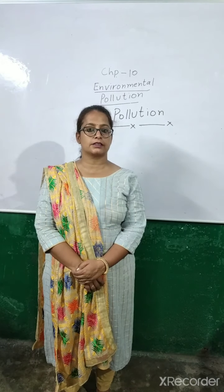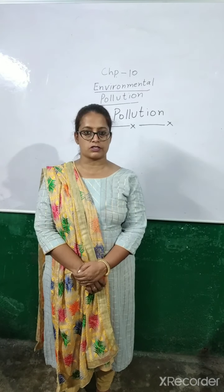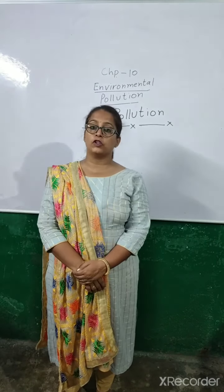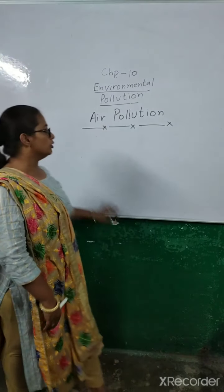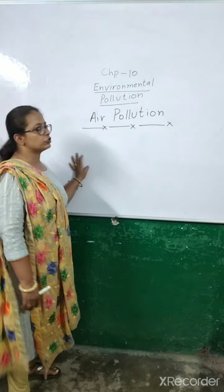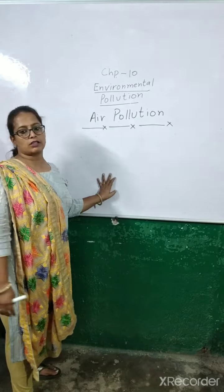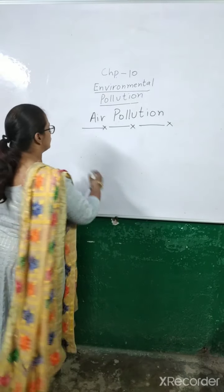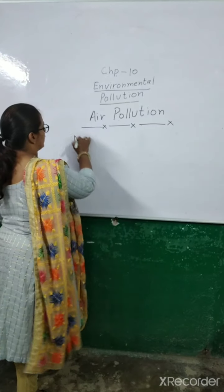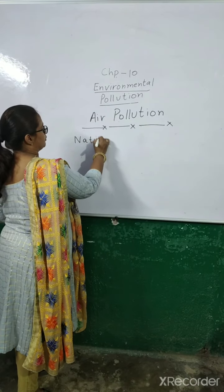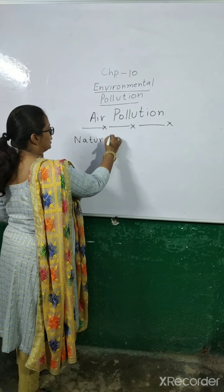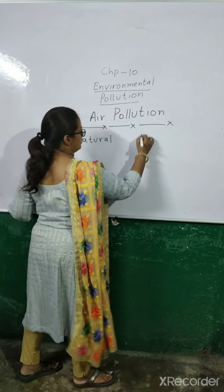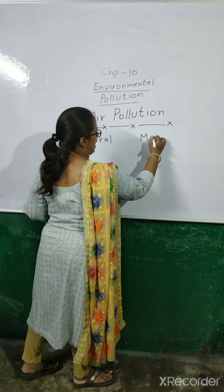We know how it is caused, but still we will talk about it. We are going to talk about the causes of air pollution. So basically there are two types of causes of air pollution — one is natural and another one is man-made.